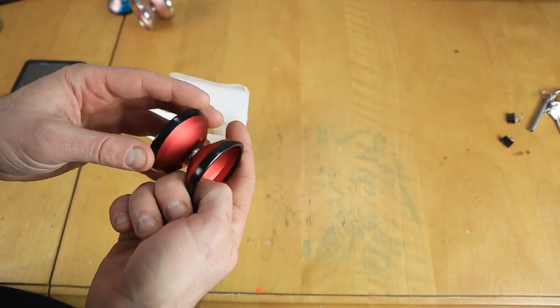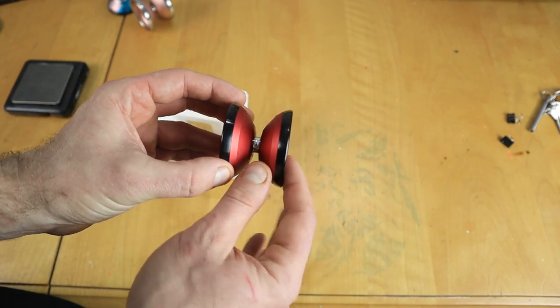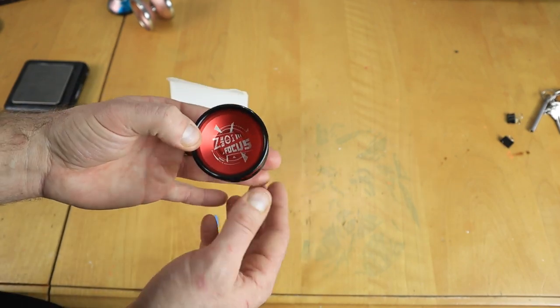So it comes in all different cool colors and stuff. Magic Yoyo, let me pick which one I got. So I opted for this one. It's like the red wine, the nice deep red color with the black rims. I just thought that looked awesome.